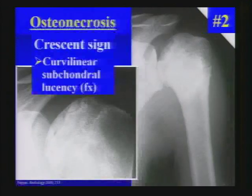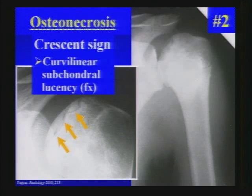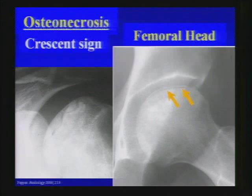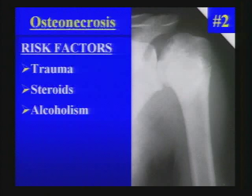Here's a frontal cone-down view of the shoulder. This is a case of osteonecrosis. What we see is a crescent sign — the curvilinear subchondral lucency due to a fracture in necrotic bone. It's reminiscent of what we see in the femoral head and is a classic boards trick: showing a classic feature in an unusual location. The three most common risk factors for osteonecrosis are trauma, corticosteroids, and alcoholism.